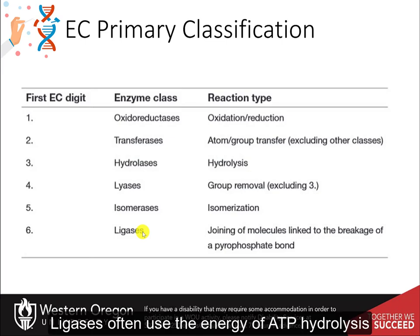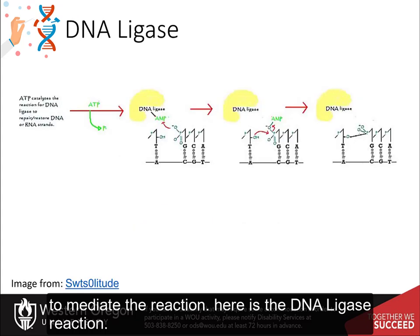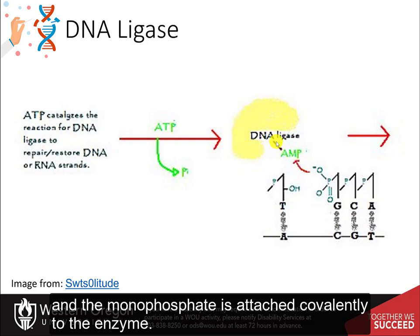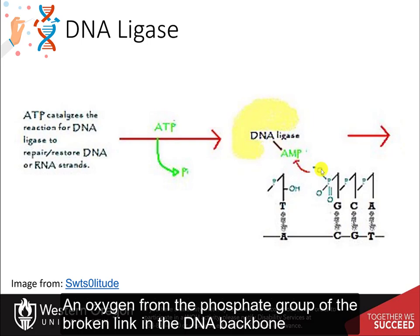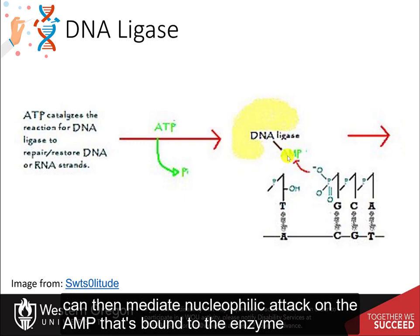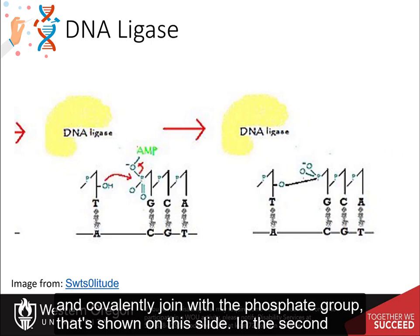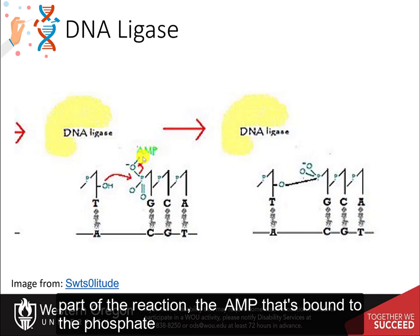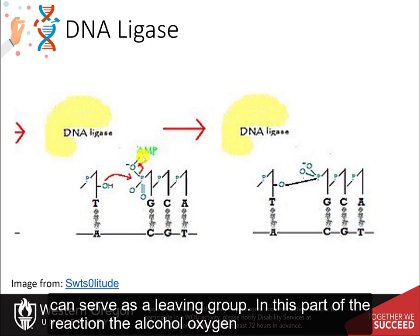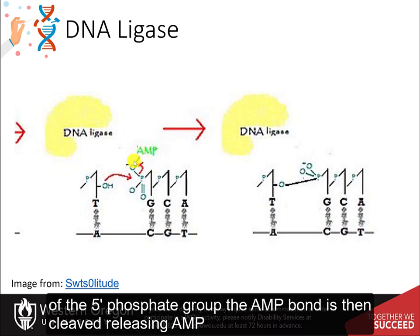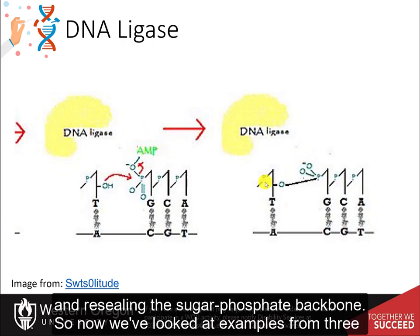Ligases often use the energy of ATP hydrolysis to mediate the reaction. In the DNA ligase reaction, ATP is cleaved and the monophosphate is attached covalently to the enzyme. An oxygen from the phosphate group of the broken link in the DNA backbone then mediates nucleophilic attack on the AMP bound to the enzyme, causing it to release and covalently join with the phosphate group. In the second part, the AMP serves as a leaving group, and the 3'-hydroxyl mediates nucleophilic attack on the 5'-phosphate, releasing AMP and resealing the sugar-phosphate backbone.